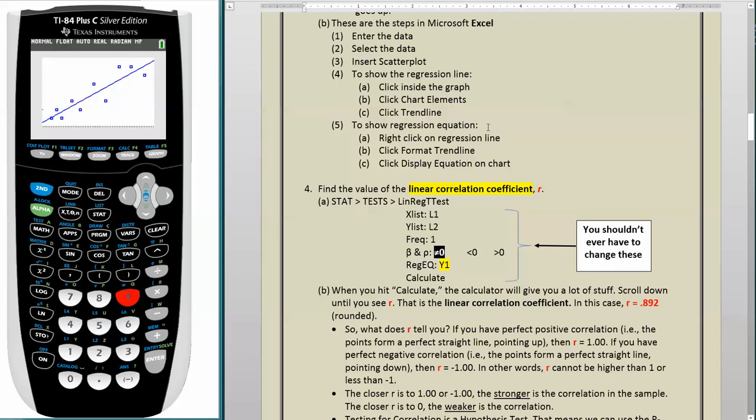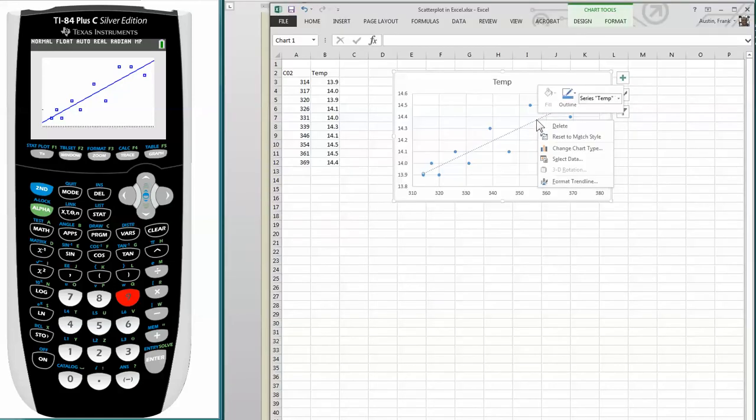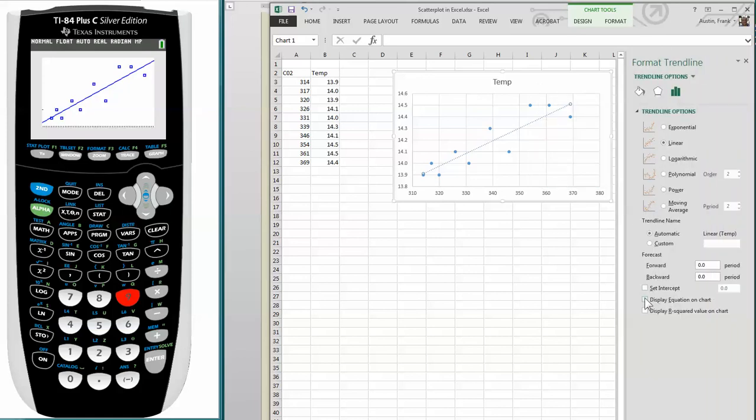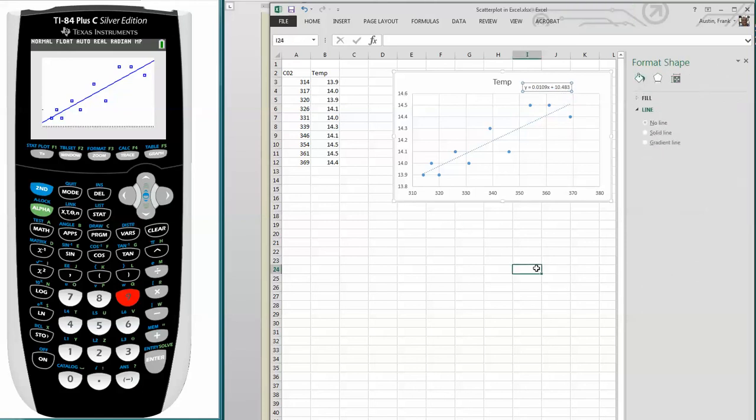Now we want to show the regression equation. So we will right click on the regression line. We will click format trend line. And we will click display equation on chart. And there you go. And it's sort of obscured by these points here, so we can move it around anywhere you want. So there you see how to create your scatter plot and your regression line and your regression equation in Excel. And we will talk later about what this regression equation means. But for right now, you see how to portray it.